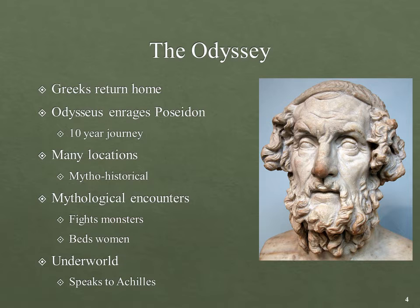Odysseus wants to get home to his wife, so that over the course of five books he can murder everyone who's been trying to marry her. Because he's a hero. He's married, has kids, but beds women left, right, and center throughout these adventures — he's basically Captain Kirk. Instead of a five-year mission, it's a ten-year mission. But he gets to speak to Achilles in one of these adventures in the underworld — that's the point of bringing up the Odyssey right now.